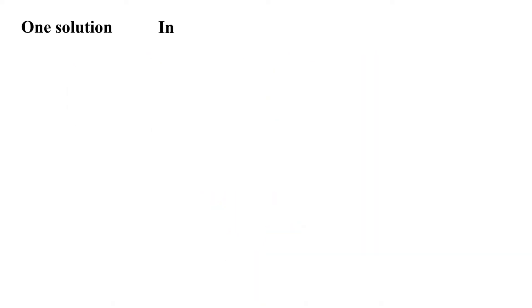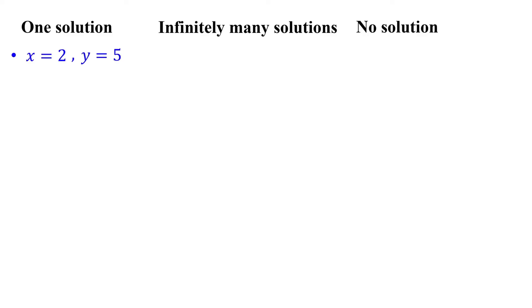Systems of linear equations can have one solution, infinitely many solutions, or no solution. When you solve systems using substitution or elimination, for the case of one solution, you get one value for x and one value for y, like x equals 2 and y equals 5 — meaning only one ordered pair makes both equations true. For infinitely many solutions, you end up with a number equal to itself, like 3 equals 3, which is always true, indicating countless ordered pairs satisfy both equations. For no solution, you get a contradiction like 0 equals 9, meaning no ordered pair can satisfy both equations.